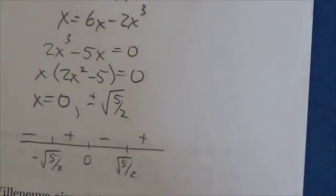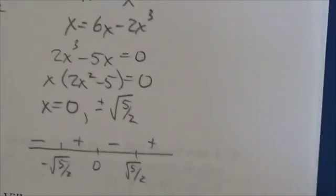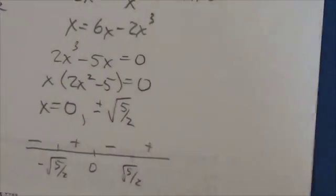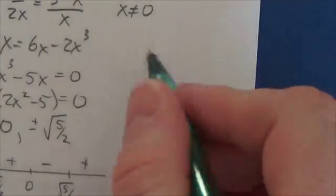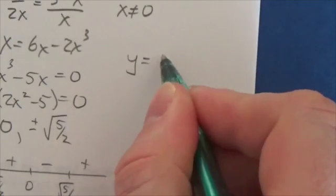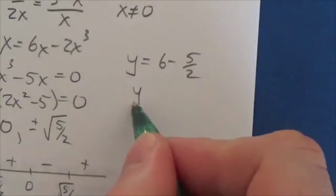And if you plug that in to the original equation - up here, six minus x squared - that's going to be six minus five halves, the y coordinate. And by the way, whether that's positive or negative, you're going to get that. So y equals six minus five halves.